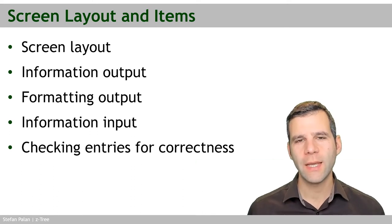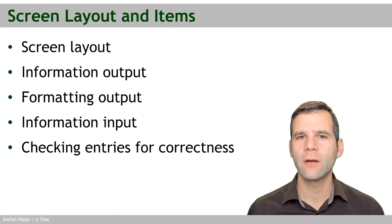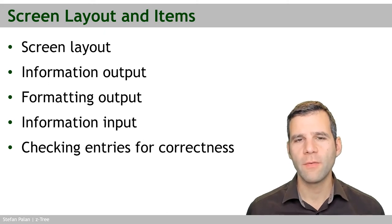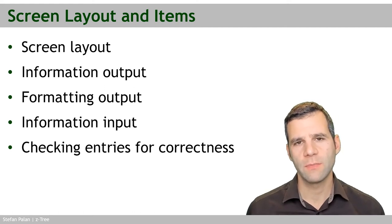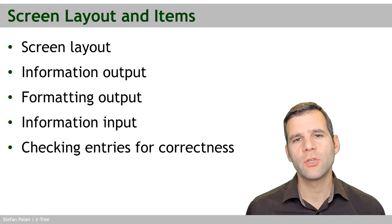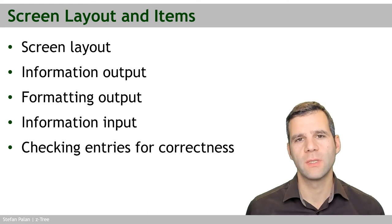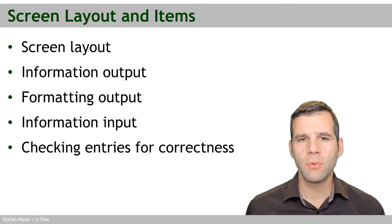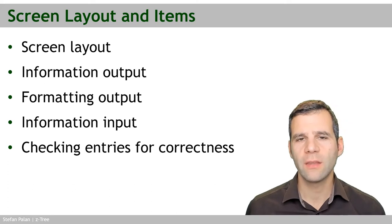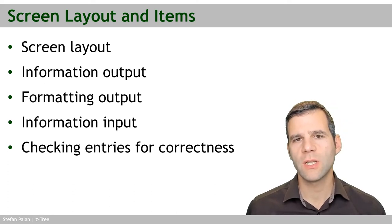In this chapter we'll talk about screen layout and items. Screen layout is about where on the screen z-Tree should put boxes. This is a surprisingly tricky topic even for veteran z-Tree programmers, but I'll try to make it clear. We'll start with output items, which you already encountered in the public goods game experiment, and cover many more options including how to format output. We'll then move on to input items and discuss how to check for the correctness of inputs.